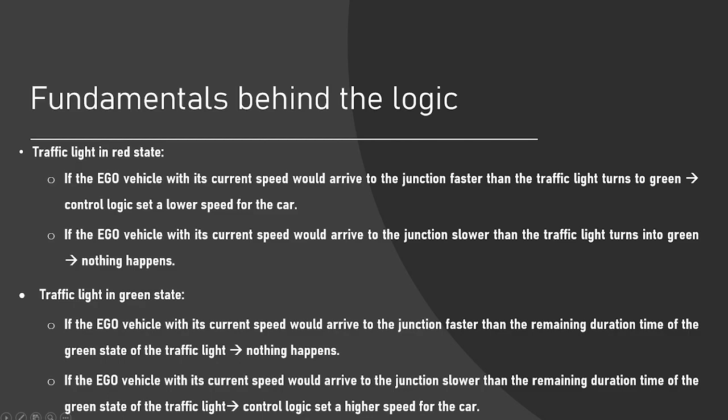If the vehicle with the current speed arrives to the junction or the intersection slower, then the traffic lights turns into green. Of course, it's good for us because we don't have to stop at the intersection. If the traffic light state is green, we have to investigate two things. First, with the current speed, if our vehicle arrives faster than the remaining duration time of the green state, it's not a problem because we go through the intersection, so the current speed is okay for us.